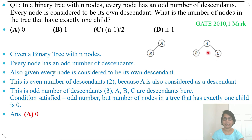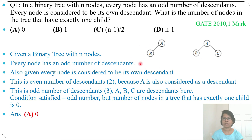Every node has an odd number of descendants, and the question asks for the number of nodes that have exactly one child. In this tree there is no node having exactly one child with an odd number of descendants, because with one child the number of descendants is always even. So the answer is zero.